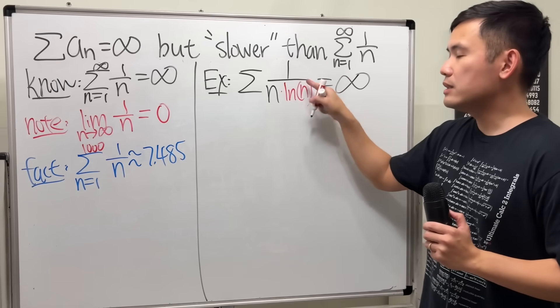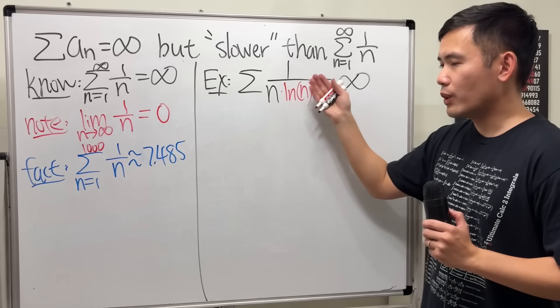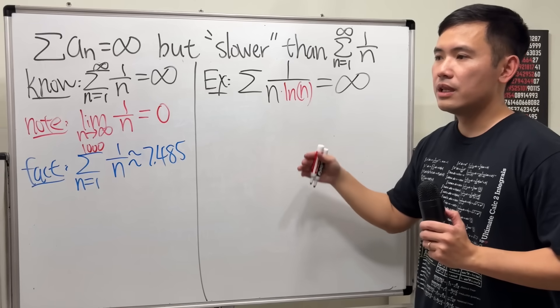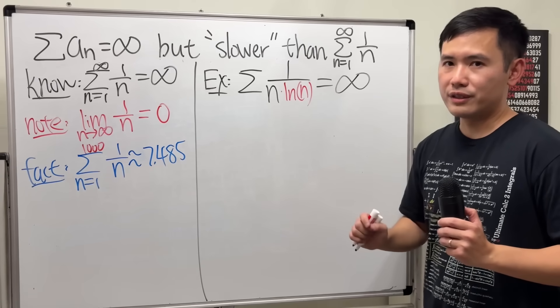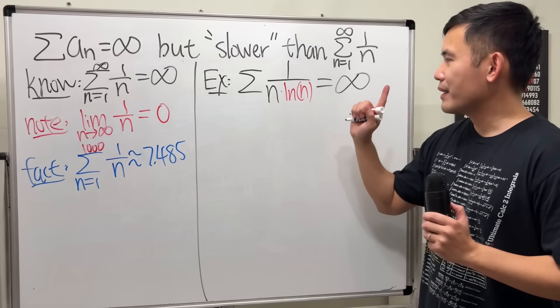Do not pick n to the 1/2 power though because n times n to the 1/2 power by the p-series, that series also converges. But this right here works wonders. Now, here's one small deal.